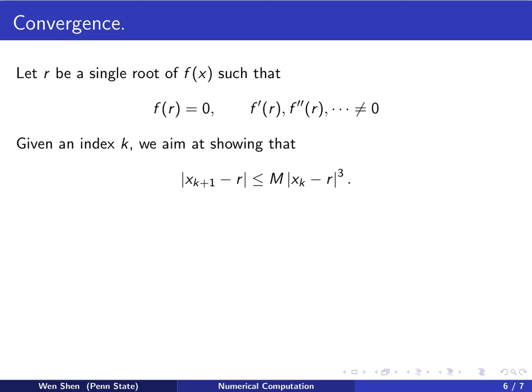Now given an index k, we aim at showing the following relation. |xₖ₊₁ - r| shall be bounded by some constant M times |xₖ - r| to the power 3. And this is exactly the cubic convergence, if we can show it.